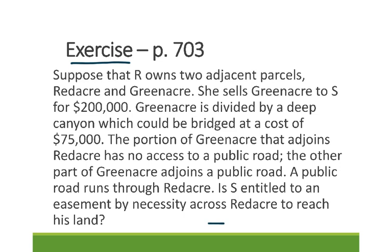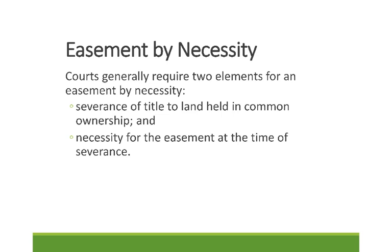Is S entitled to an easement by necessity across Red Acre to reach their land? To answer this, let's go back and look at the elements for easement by necessity. For an easement by necessity, you need two elements. The first is the severance of title of land held in common ownership. Based on the facts, R owned both parcels and severed title by conveying Green Acre, so we have common ownership.